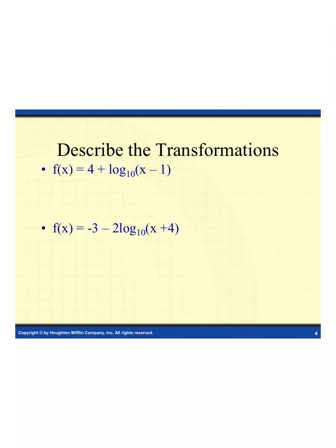We're going to talk about some transformations and what they do to our function. To begin with, we have 4 plus log base 10 of x minus 1. We have a 4 and a minus 1. The 4 is going to be your vertical shift, so we're going to go up 4. The negative 1 is your horizontal transformation, so we're going to go to the right 1 — we're doing the opposite of what it says.